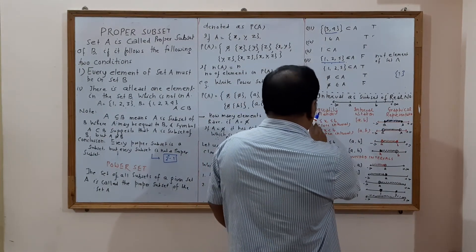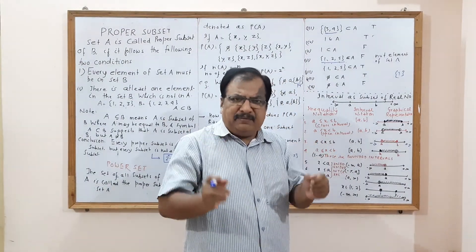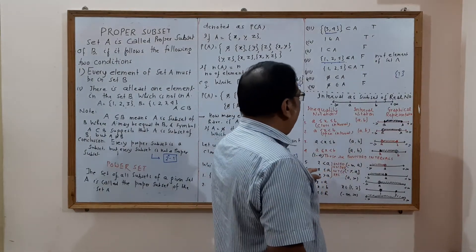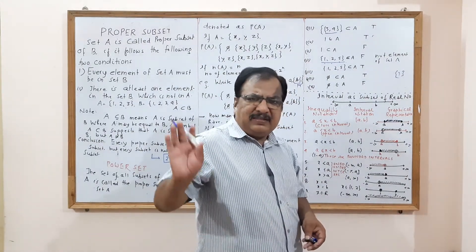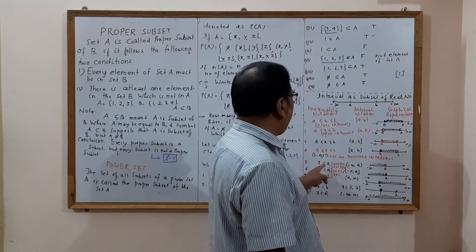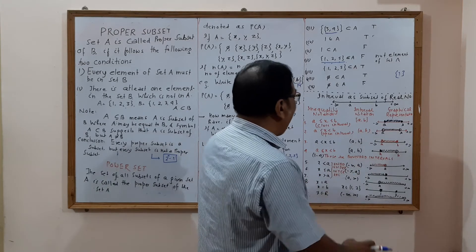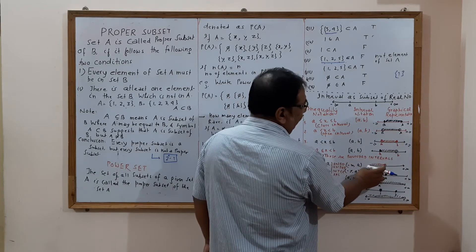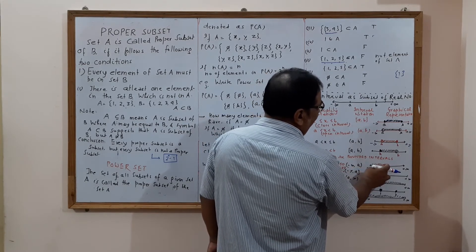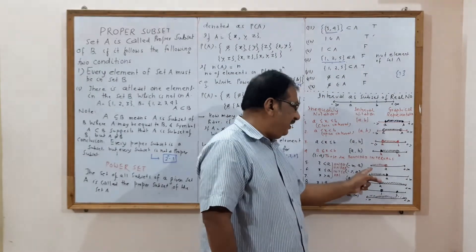These four types — closed, open, open-closed, and closed-open — are called bounded intervals, because two points A and B are binding them on both sides. Now, unbounded intervals mean one side is unbounded. For X less than A, X belongs to (−∞, A) — both under parentheses. We always use parentheses for infinity because it is a fictitious notation.